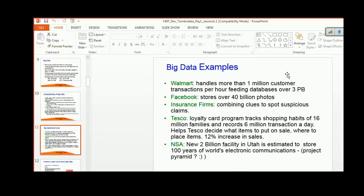Facebook stores more than 40 billion photos, and all this data is indexed into HBase tables with reports generated. Insurance firms use big data Hadoop to spot suspicious claims from the repository. Tesco has a loyalty card program which tracks shopping habits of 16 million families and records 6 million transactions a day. This helps Tesco decide what items to put on sale and where to place items.